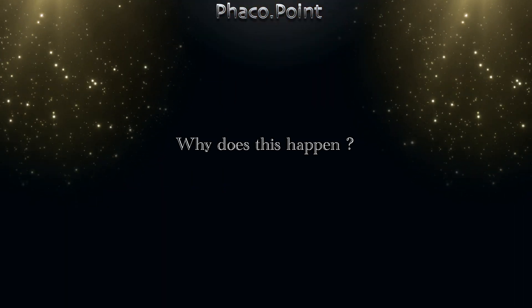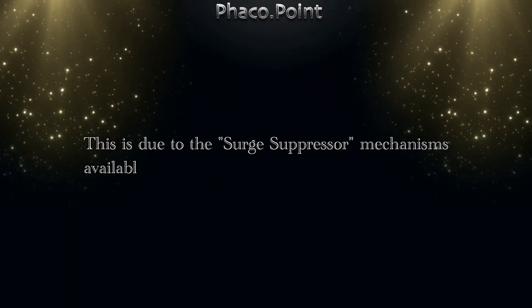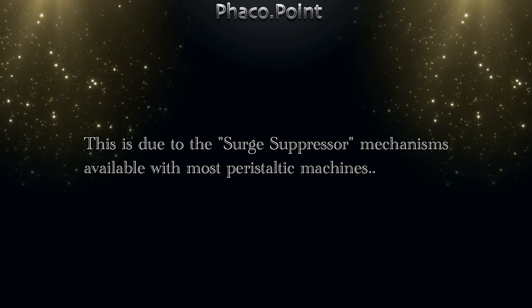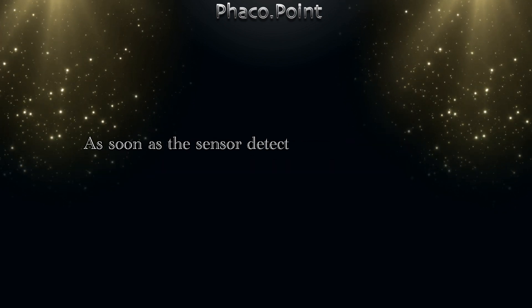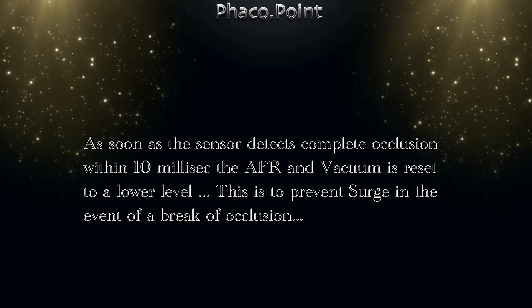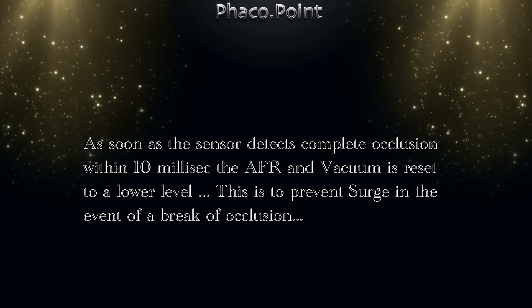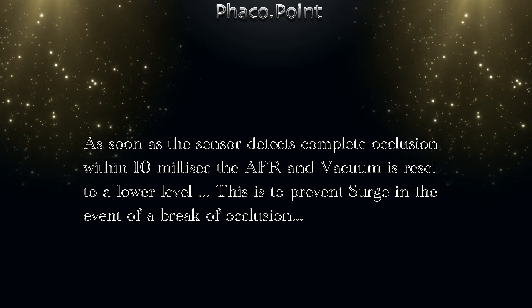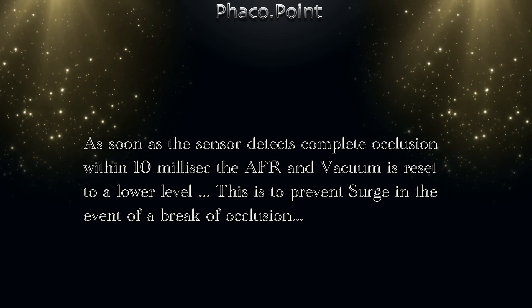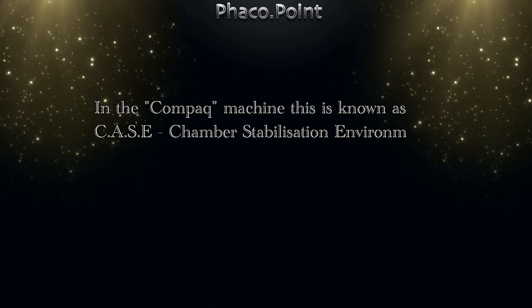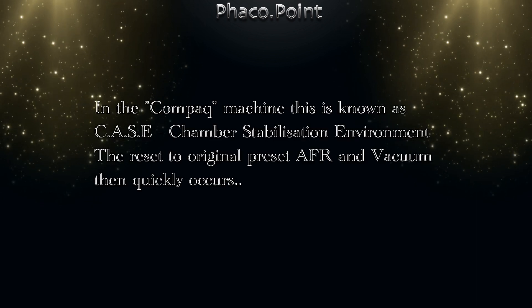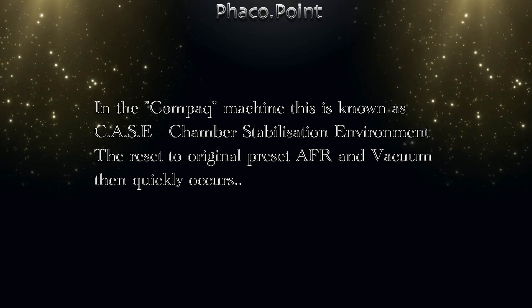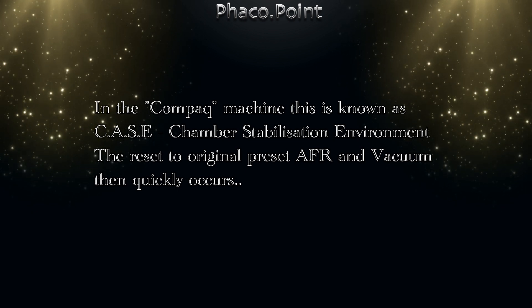Here is the explanation for why this happens. This is due to the surge suppressor mechanisms available with most peristaltic machines, because as soon as the sensor detects complete occlusion within 10 milliseconds, the aspiration flow rate and vacuum is reset to a lower level. This is to prevent surge in the event of a breakdown of occlusion. In the compact machine, this is known as the Chamber Stabilization Environment. The reset to the original preset AFR and vacuum then quickly occurs.